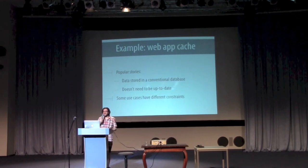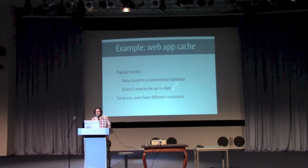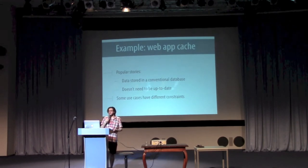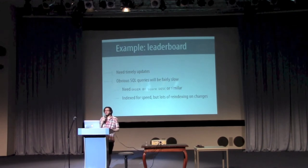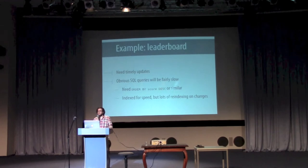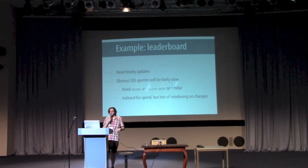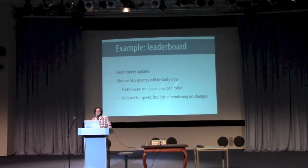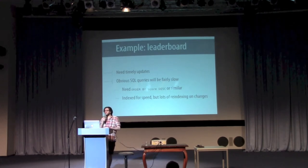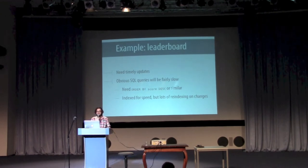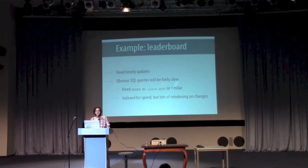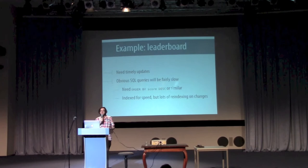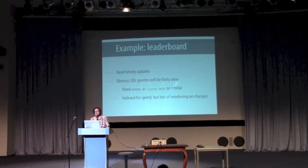Going back to the web caching example just for a moment — we were assuming that there's a database with enough data to calculate the list of popular stories and that it doesn't need to be very up to date. But some cases look superficially similar but with different constraints. Suppose you're running an online game and you want a leaderboard of the top-scoring players. If you have a lot of players, you probably have to make sure the leaderboard is always as up to date as possible. Modeling that in a relational database would be pretty easy — a table with users and scores, inserting and updating as needed, then a SELECT with ORDER BY score DESC. The problem is that to make that SELECT query fast enough, you'll need an index on the score column, but then updates will have to re-index data on disk, so they'll be slow and do quite a lot of I/O.